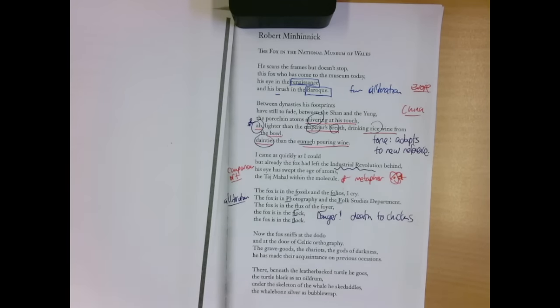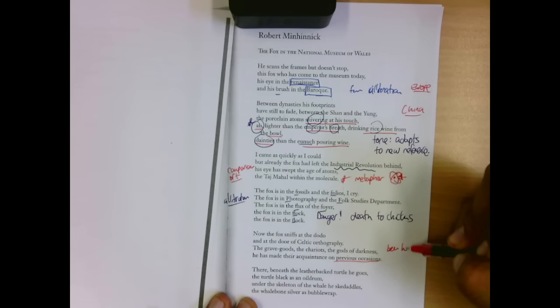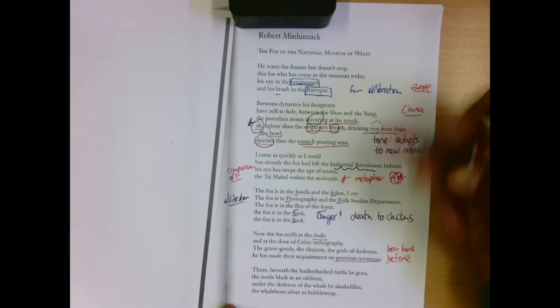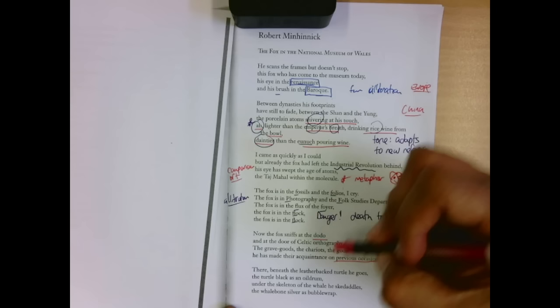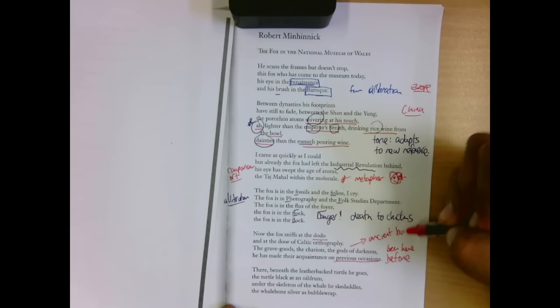Now, the fox sniffs at the dodo, at the door of Celtic orthography, the grave goods, the chariots, the gods of darkness. He has made their quaintness on previous occasions. He's been here before. Or maybe it's the speaker that's been here before and looked at these things. But he's looking at everything, the birds, the ancient burials. He's been dead. Maybe he's been reborn.